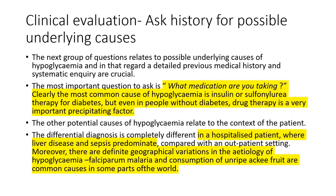The next group of important questions tries to look for any underlying causes. The most important question to ask is: what medication are you taking? The most common cause of hypoglycemia is either insulin use or sulfonylurea therapy for diabetes. The differential diagnosis is completely different in a hospitalized patient, where liver disease, sepsis, and renal failure predominate compared with an outpatient setting. Certain causes may also be more prevalent depending upon geographical location — for example, falciparum malaria or consumption of unripe ackee fruit.